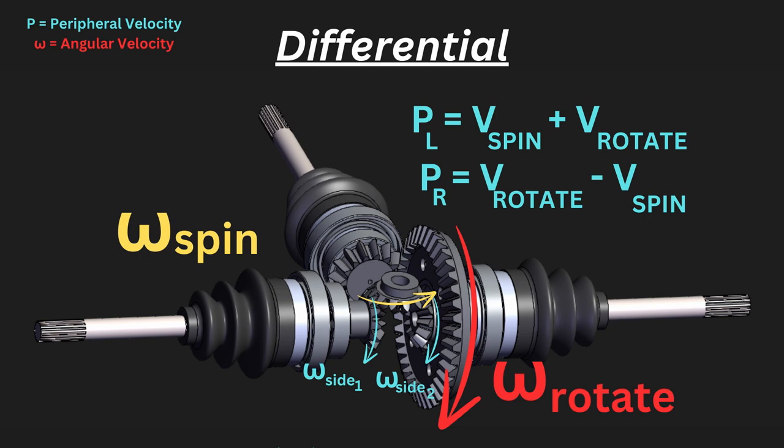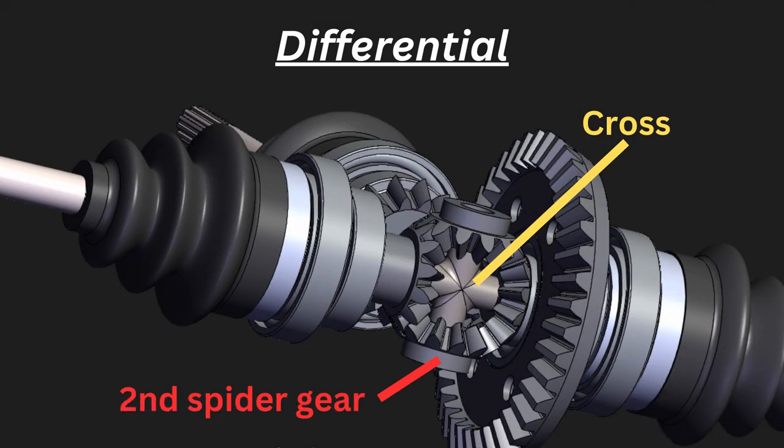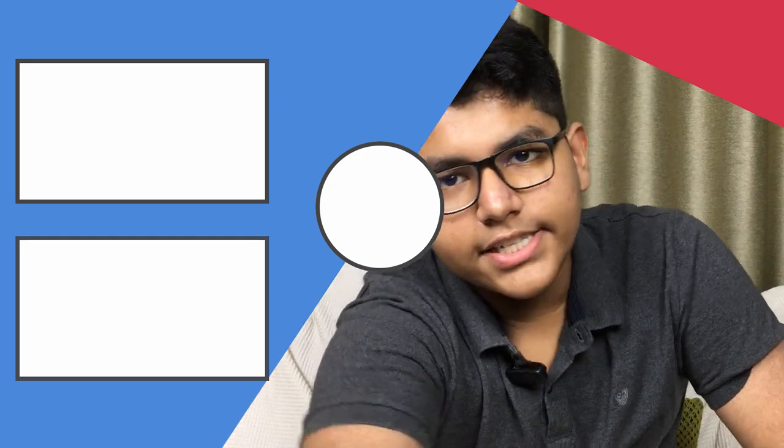Usually in a differential system there are two spider gears to balance it out, but the basic principle is the same. That's all there is to differentials. If you want to learn more about drivetrains, car parts, physics, or other science subjects, please like the video, subscribe, leave a comment, and ring the notification bell so you're informed of any new content. Thank you for watching and I'll see you next time!